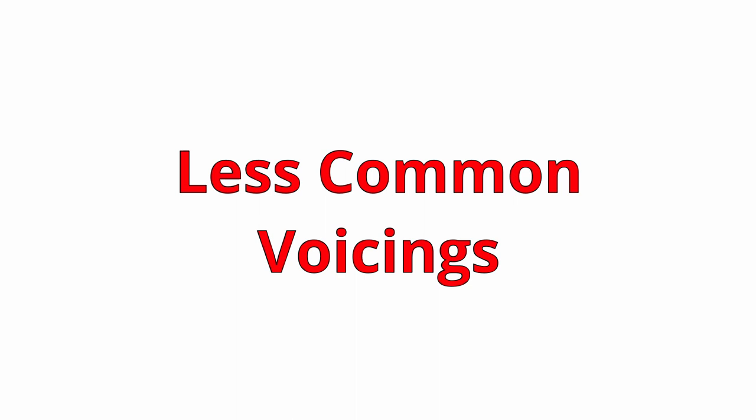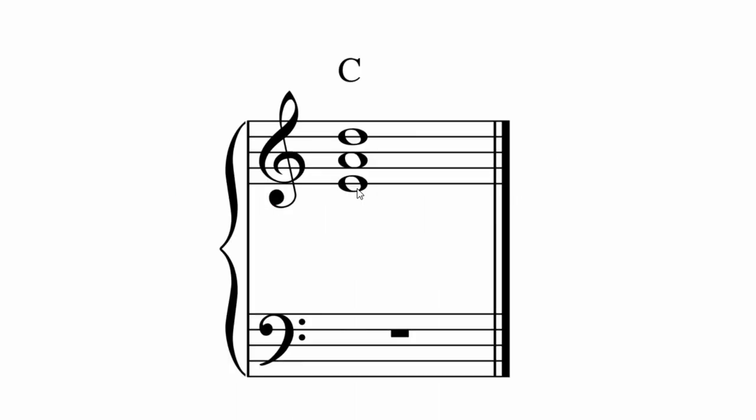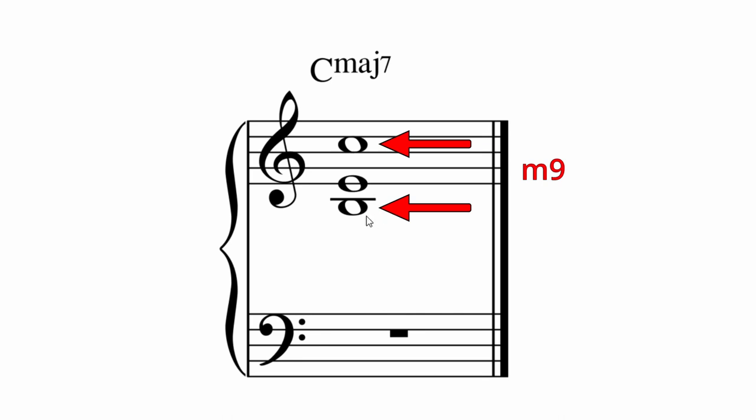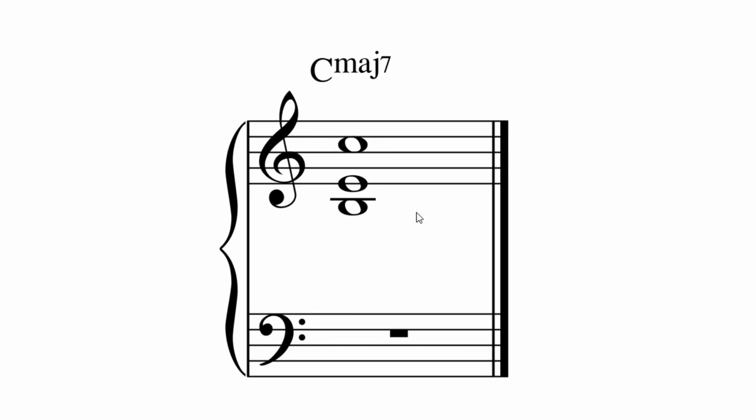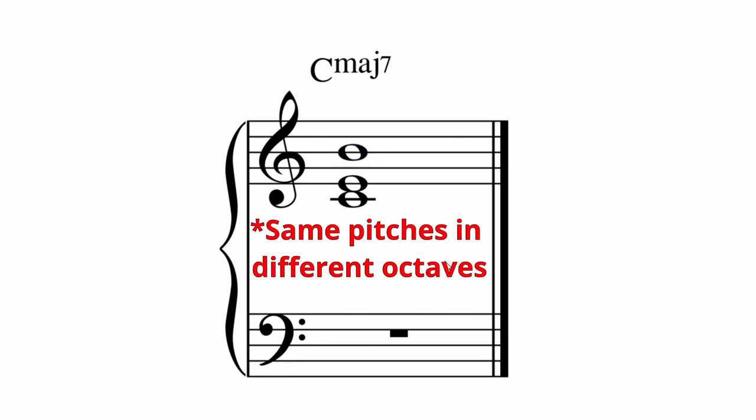Let's talk about some more experimental voicings. If you wanted to try some extra dissonance you could try something like this. Now that's just a C major seven with a seventh, third, and root. But the minor ninth interval between the B and the C makes it a little bit spicy. It's interesting how much more dissonant this is compared to when the outer notes are just swapped. It's the same chord but it has quite a different sound.